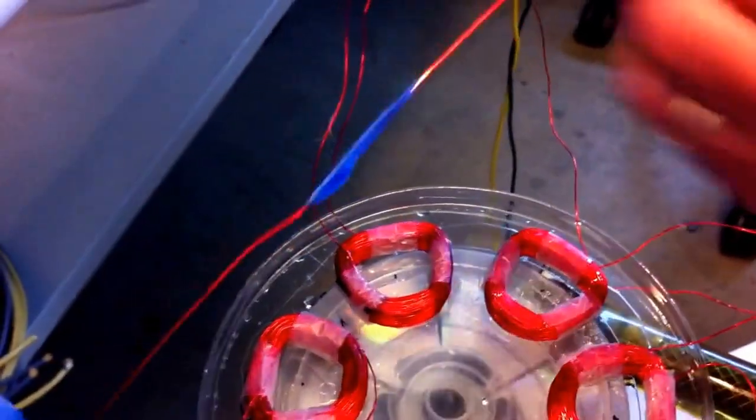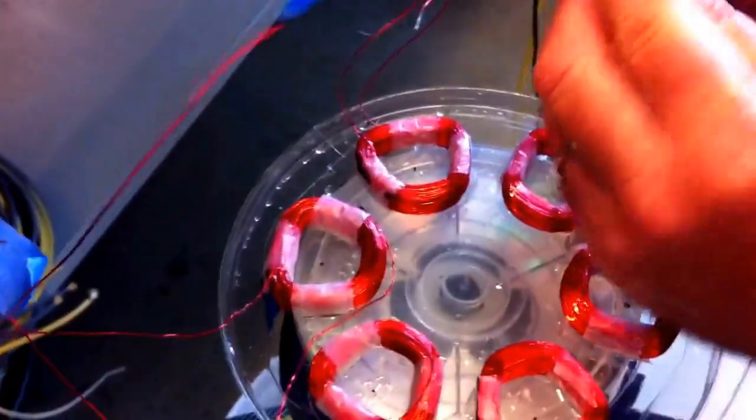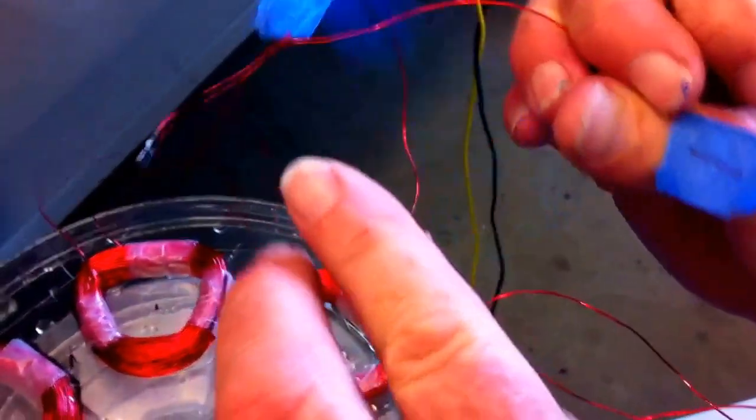We left eight inches of wire free at each end of each winding and marked them positive and negative. The wires will be attached to a full bridge rectifier to convert alternating current to direct current.